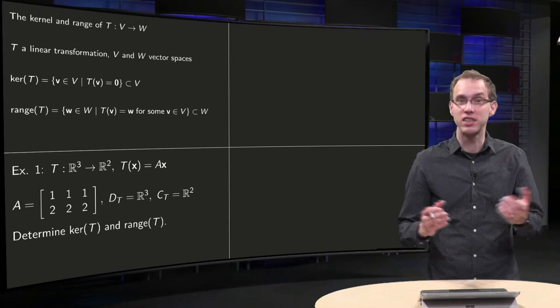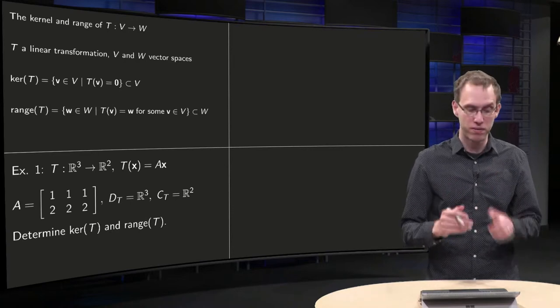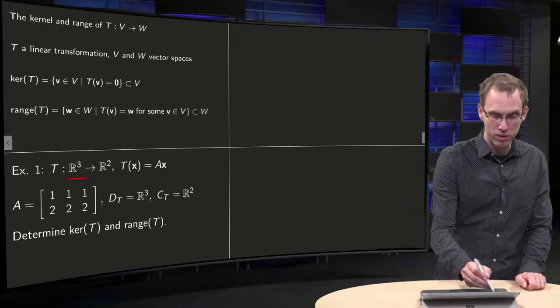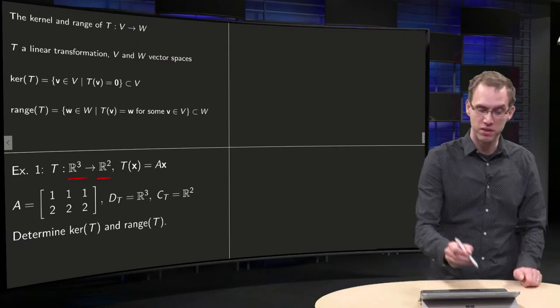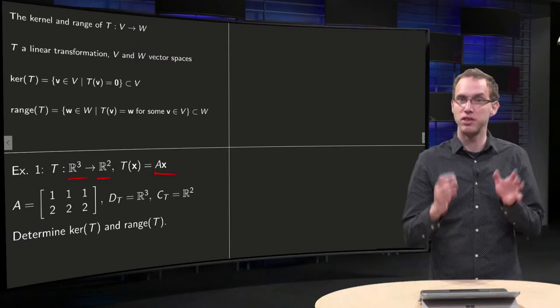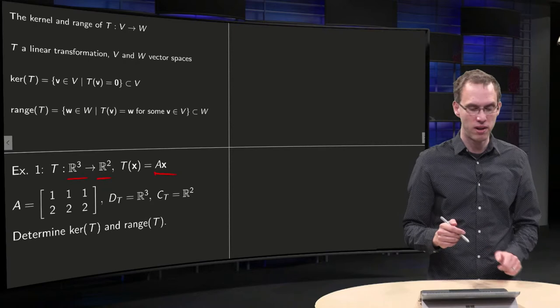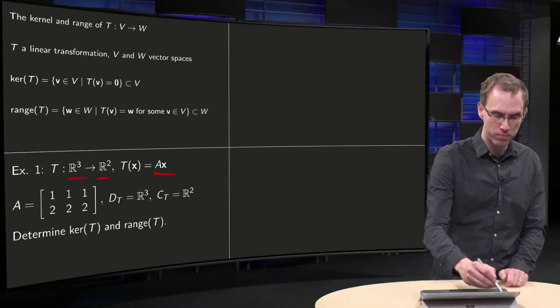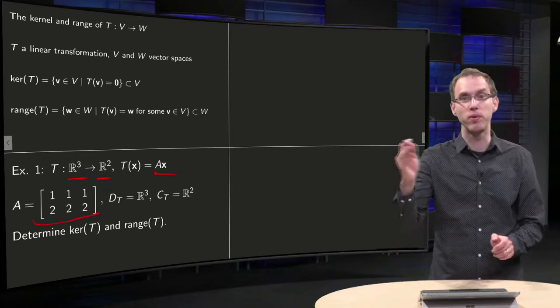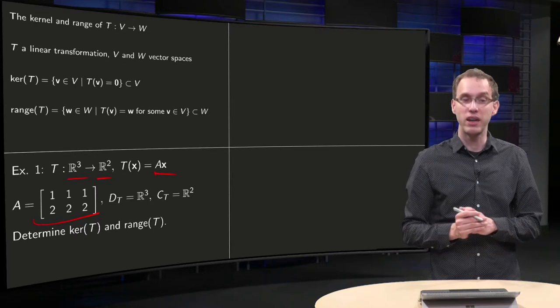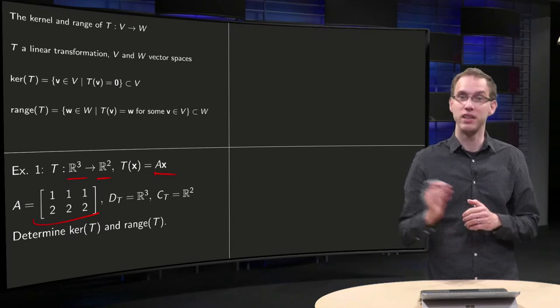What about a matrix transformation? What if you have a transformation from R³ to R², and if T is given by the matrix A, so T(X) equals A times X. Let's do an easy example. A is the matrix [1 1 1; 2 2 2], and now we want to determine the kernel of T and the range of T.